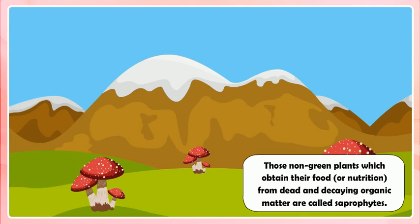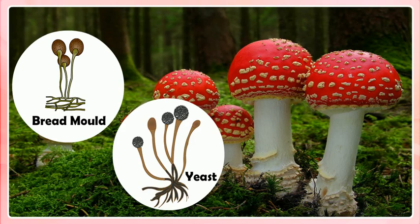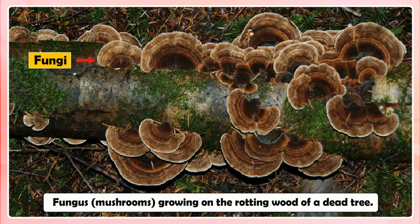Saprophytes. Those non-green plants which obtain their food or nutrition from dead and decaying organic matter are called saprophytes. Fungi such as mushrooms, bread mold and yeast are saprophytes. The saprophytic plants, or fungi, secrete digestive juices on the dead and decaying organic matter and convert it into a solution. They then absorb the nutrients from this solution. This mode of nutrition in which plants take in nutrients from dead and decaying organic matter is called saprophytic nutrition.